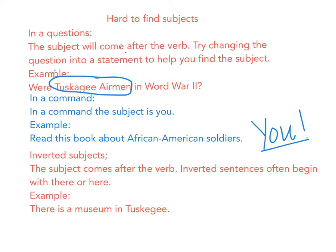Another one is inverted subjects — this is when the subject doesn't always come at the beginning of the sentence. In inverted sentences, the subject comes after the verb. Inverted sentences often begin with 'there' or 'here.' For example: 'There is a museum in Tuskegee.' Who or what is in Tuskegee? It is a museum.